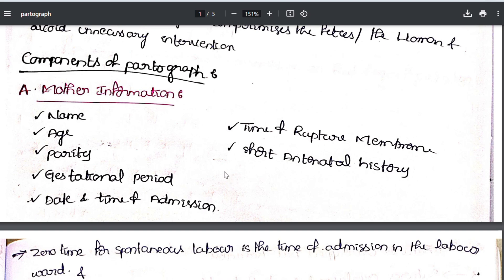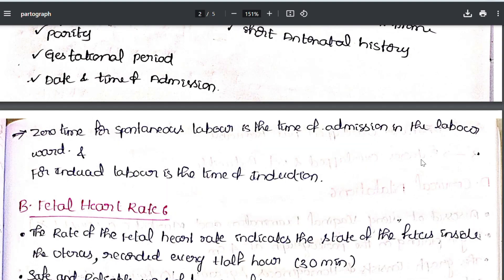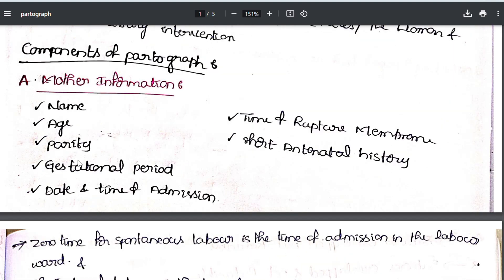Mother information also includes the date and time of admission, and time of rupture of membranes — amniotic membranes. A short antenatal history is also noted, such as whether the previous delivery was by LSCS, or if the mother had preeclampsia, GDM, or other conditions. Zero time for spontaneous labor is the time of admission; for induced labor, it is the time of induction.